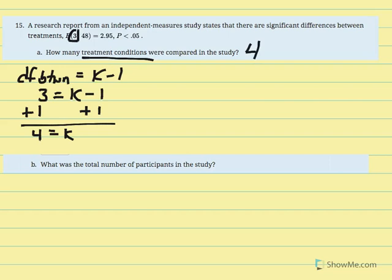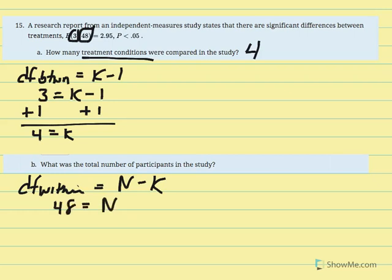Now we determine the total number of participants. The total comes from DF within, which is the denominator: 48. DF within equals N minus k, so 48 equals N minus 4. Adding 4 to both sides, N equals 52. There were 52 total participants in this study.